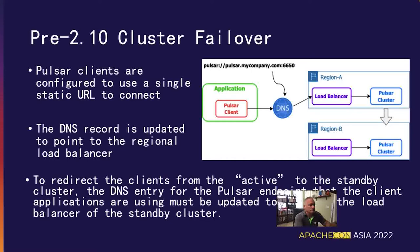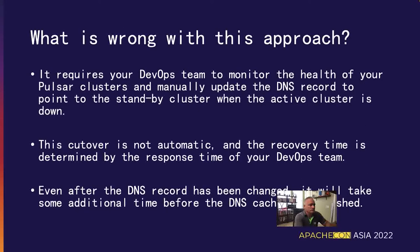Then, when a regional failure occurred, the best you could do was manually change the DNS entry for that URL to point to the standby cluster. Obviously there are many things wrong with this approach. First and foremost, it requires your DevOps team to monitor the health of your Pulsar clusters and manually update the DNS record to point to the standby cluster when the active cluster is determined to be down. This process is not automatic, and the recovery time for a cluster outage is wholly dependent upon the response time of your DevOps team — requiring a human to be alerted in the middle of the night to make these changes. Even after the DNS record has been changed, it takes additional time for the DNS cache to be refreshed until your application is pointed to the standby cluster.